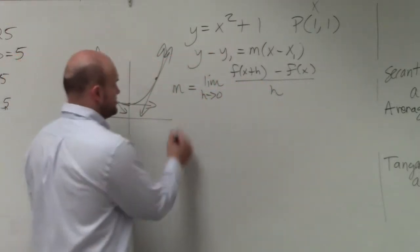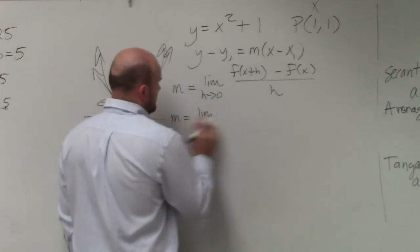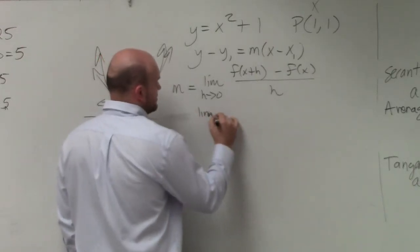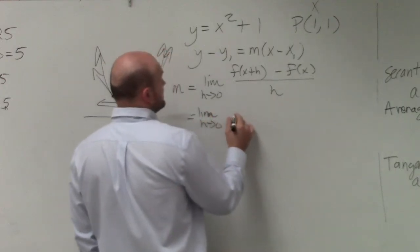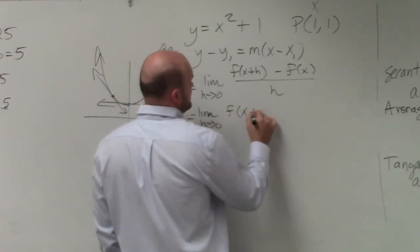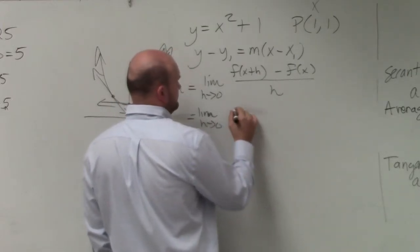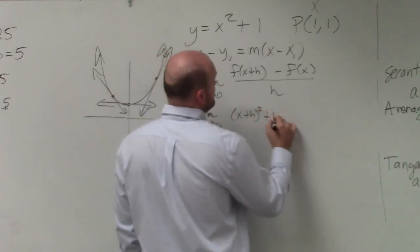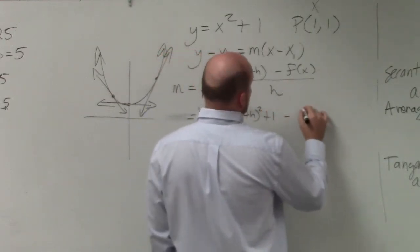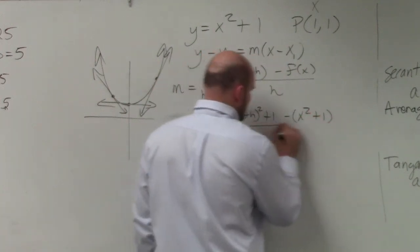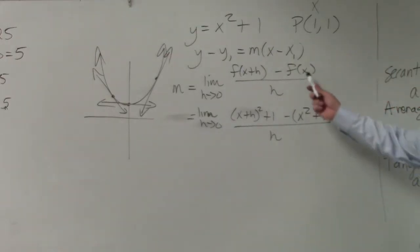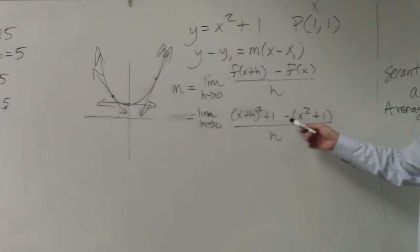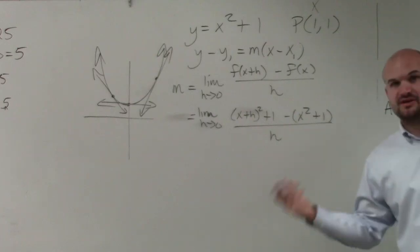So let's go ahead and figure out what this is going to be. So m equals limit as h approaches 0. That's going to be f of x plus h, x plus h squared plus 1 minus x squared plus 1 all over h. Make sure you're using parentheses. A lot of students will make a mistake and won't put x squared plus 1 in parentheses, and then they'll forget that that negative needs multiplied by x squared as well as by 1. It's a very small mistake, but it's a very common mistake.